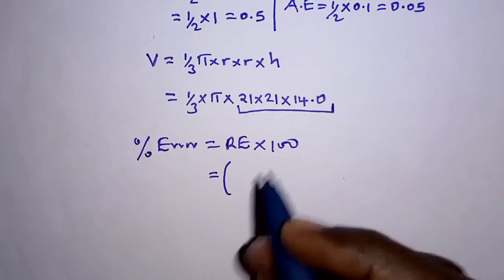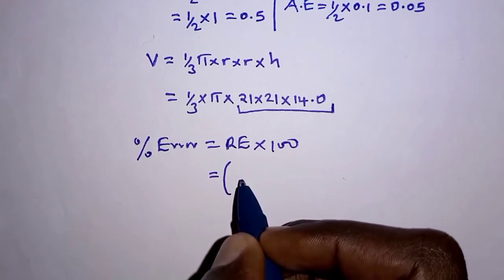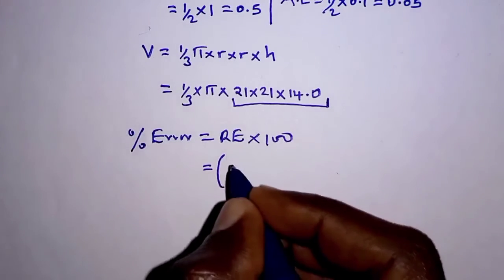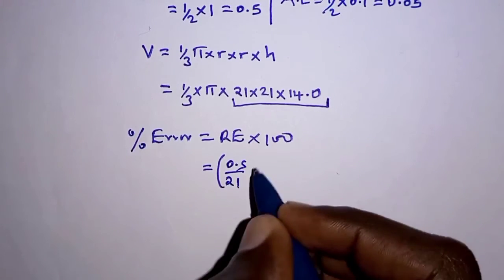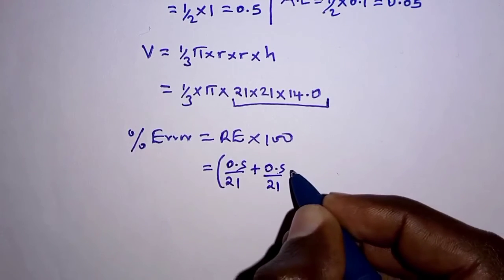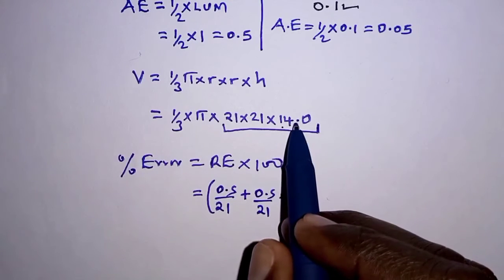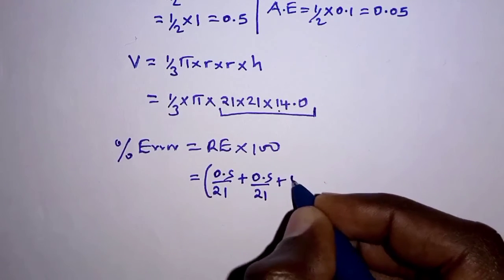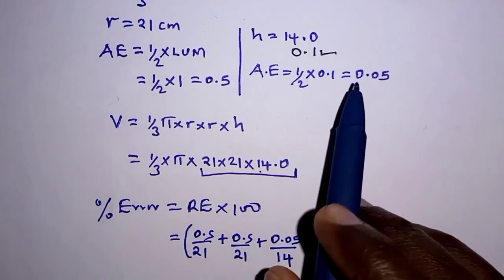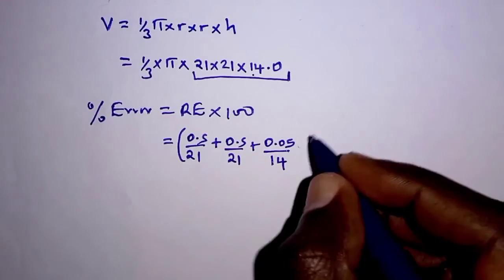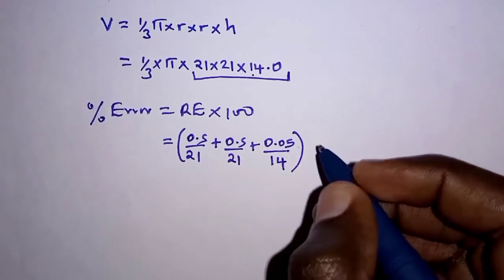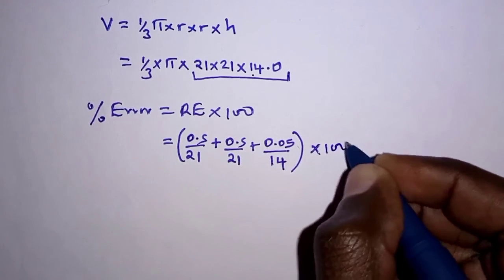The relative error is obtained as the sum of the relative errors for each measurement. Beginning with the first 21: relative error is absolute error over the actual measurement, so we have 0.5 over 21. Then we add 0.5 over 21 for the second 21. Then we add for 14.0: the absolute error here is 0.05, divided by the actual measurement 14.0. The whole of this gives us the relative error in the volume of the cone, and then we multiply by 100 to get the percentage error.